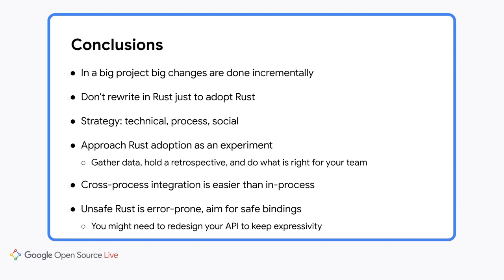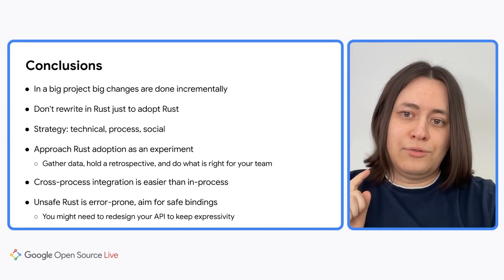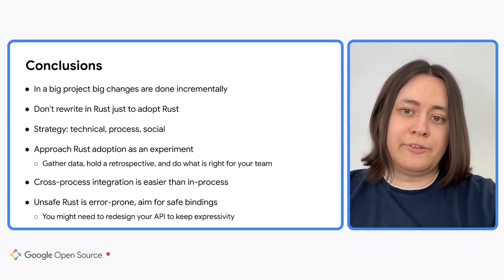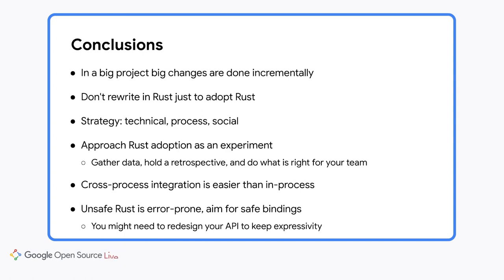And with that, I give this back to Dimitri. Let's summarize. In a big project, big changes can only be done incrementally — you shouldn't rewrite in Rust just to adopt Rust; you need a much stronger justification. Think about technical, process, and social components of your Rust adoption strategy. Approach Rust adoption as an experiment: start with a small team, gather data, hold a retrospective, and decide what to do based on your team's and leadership's response. Do what is right for your team. It is easier to start using Rust by adding a new binary to the project. If you must use in-process integration, you should aim to provide safe bindings for your non-Rust code — unfortunately, you might need to redesign some APIs to define safe bindings that preserve API expressivity, so budget extra time for that. Thank you very much for your time, and we hope this helps you adopt Rust in your project.